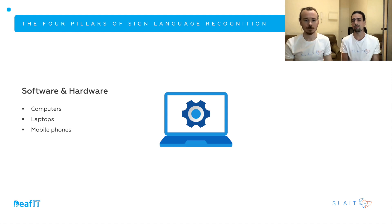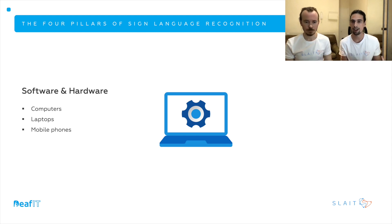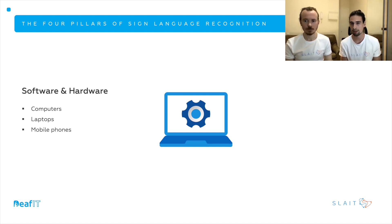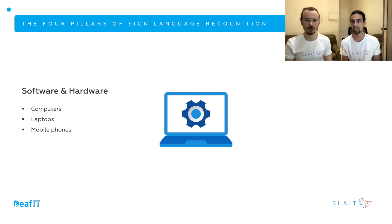Then we go to software and hardware. We want this to run on any device common to people without the need of additional hardware — we don't want to use gloves or anything. So we need to make sure our technology runs on computers, laptops, and mobile phones. In our current state, we're capable of running on computers and laptops as shown with the prototype, but we're still working on the optimization process for mobile phones.